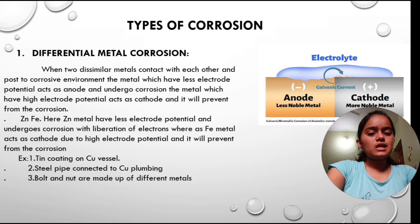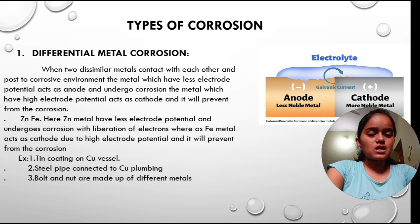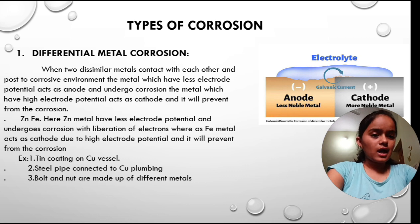Examples of differential metal corrosion include: tin coating on copper vessels, steel pipe connected to copper plumbing, and bolt and nut made up of different metals.